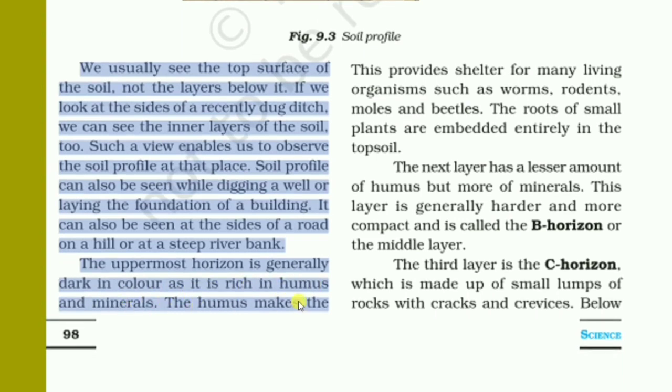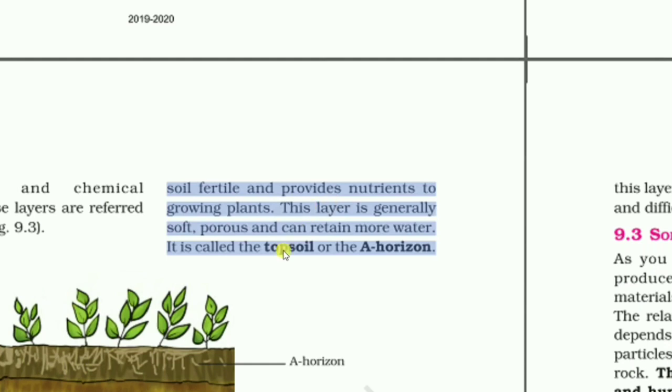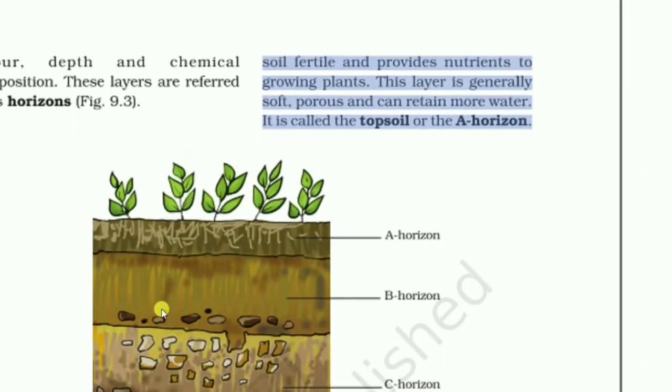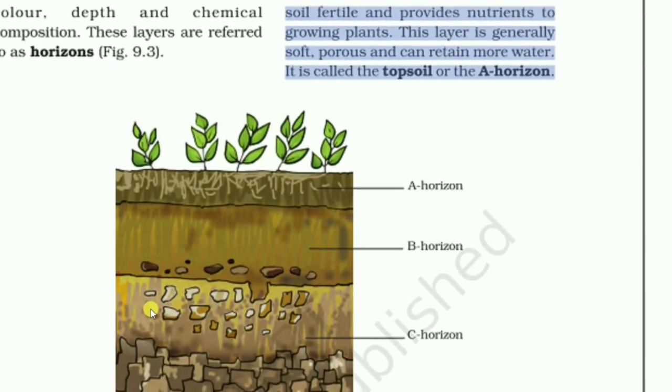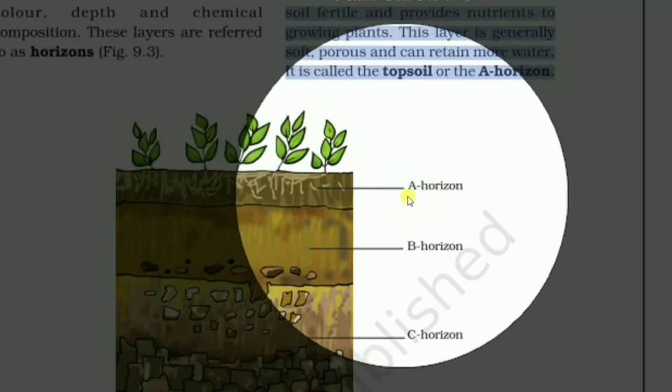The uppermost horizon is generally dark in color as it is rich in humus and minerals. The humus makes the soil fertile and provides nutrients to growing plants. This layer is generally soft, porous, and can retain more water. It is called the topsoil or the A horizon.